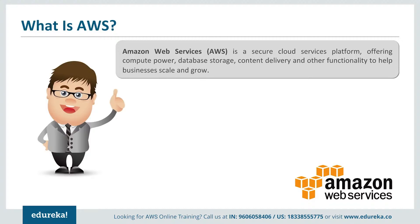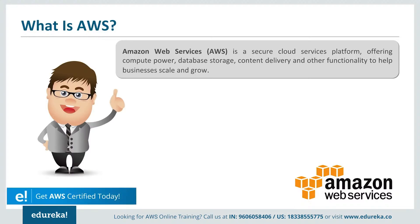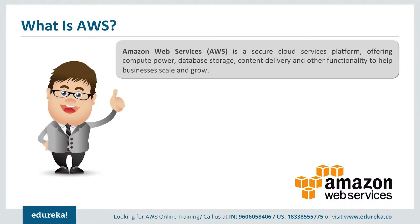Amazon Web Services provides you with 70 plus services and these services are constantly growing. To name some of these services, we have computation services, storage services, database services, and all these services are made available to you through the cloud. That means you can rent all these services and pay only for the services that you use and only for the time duration you use them.